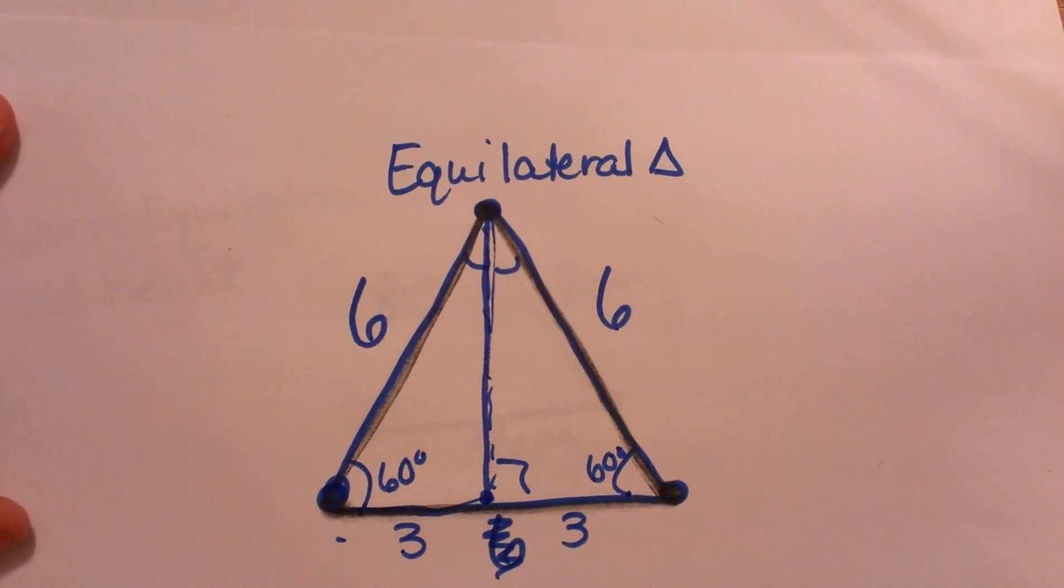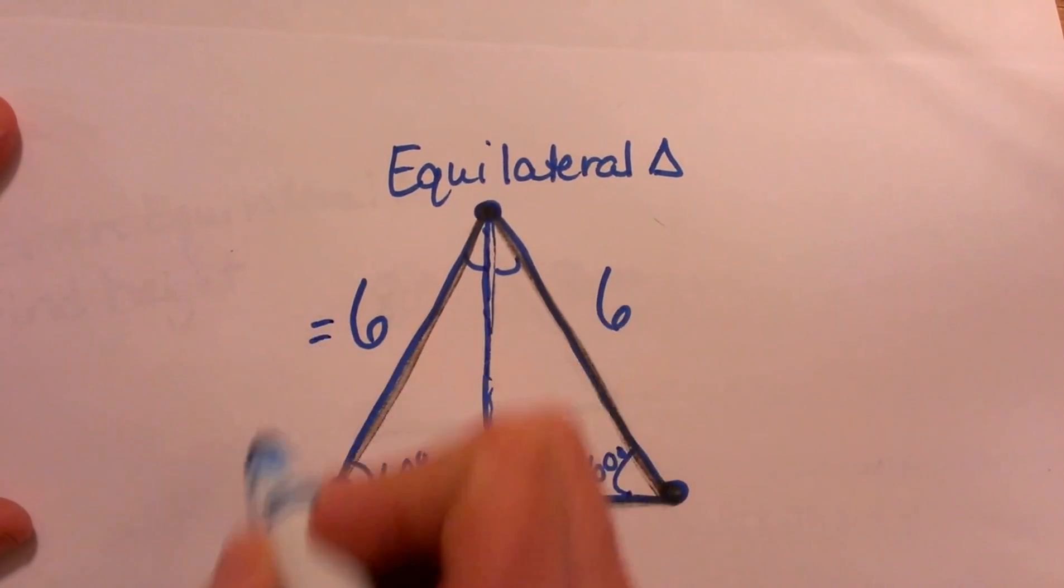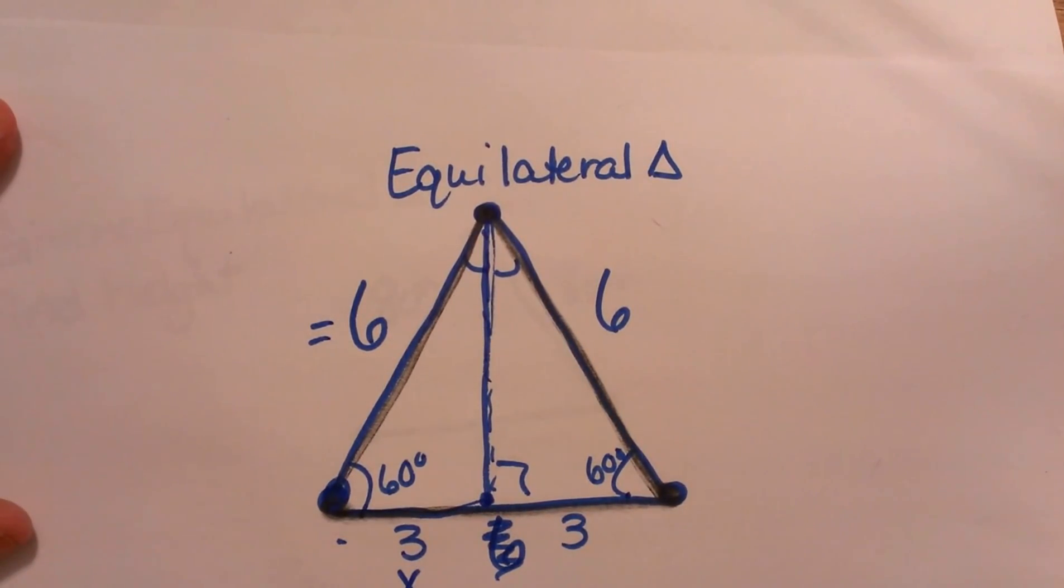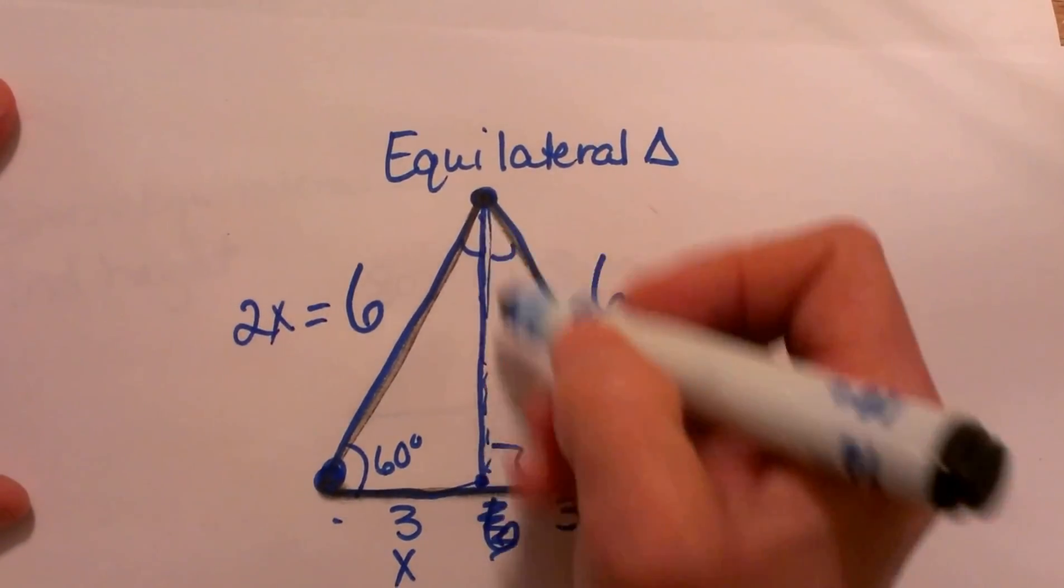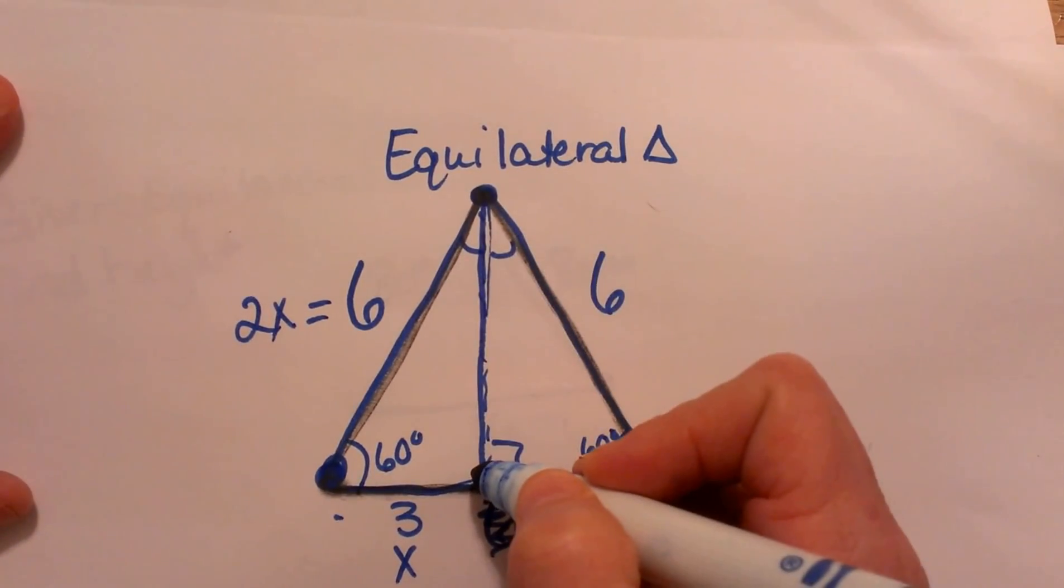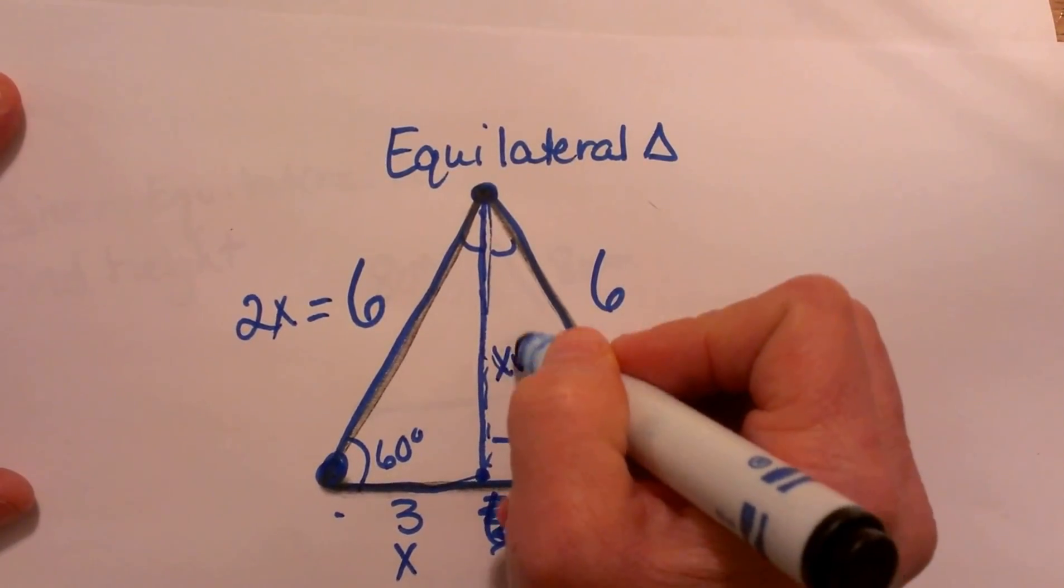And so you can see that in a 30-60-90 triangle, the short leg is x, the hypotenuse is 2x, and it is following that pattern. So all I need to do is find the formula for the height of the long leg which is x times the square root of 3.